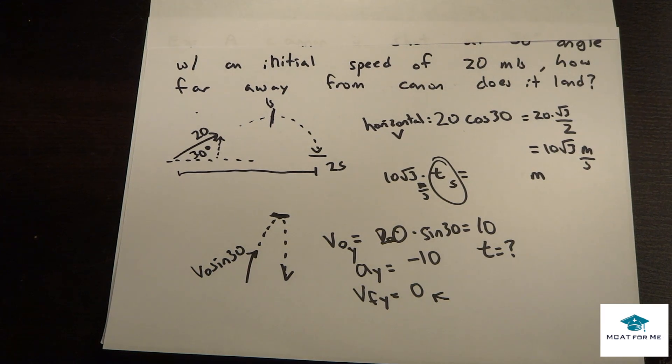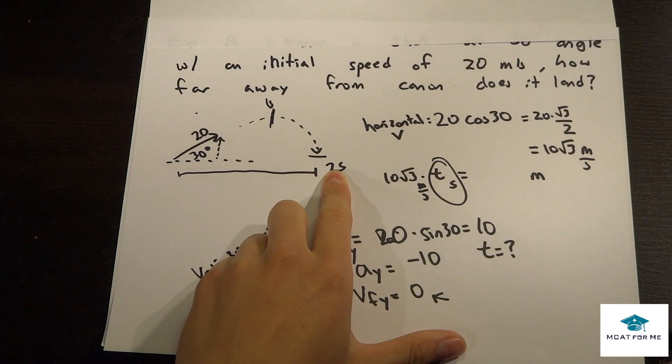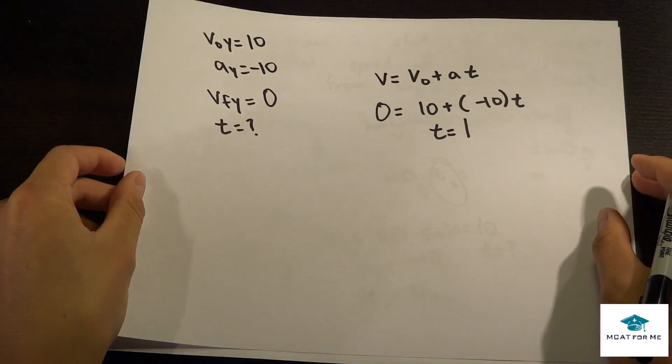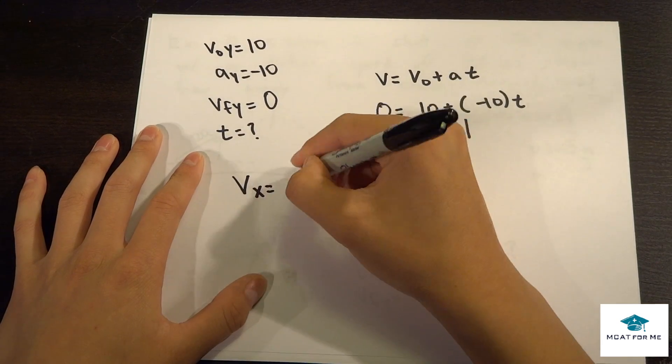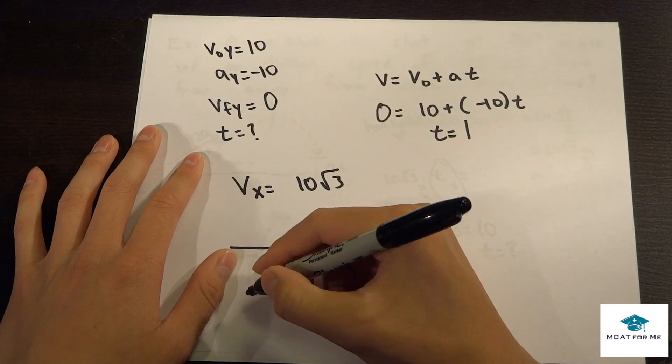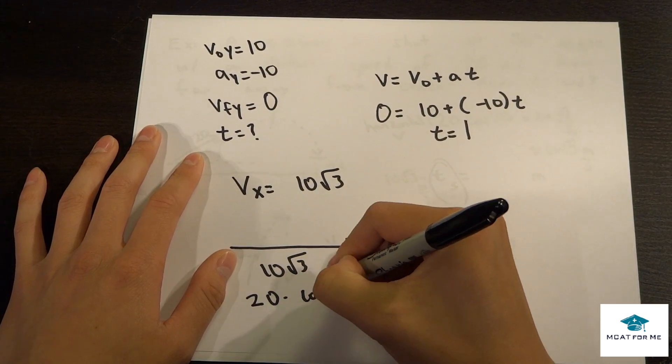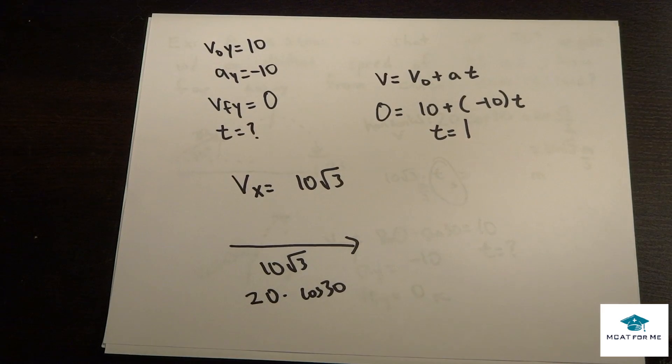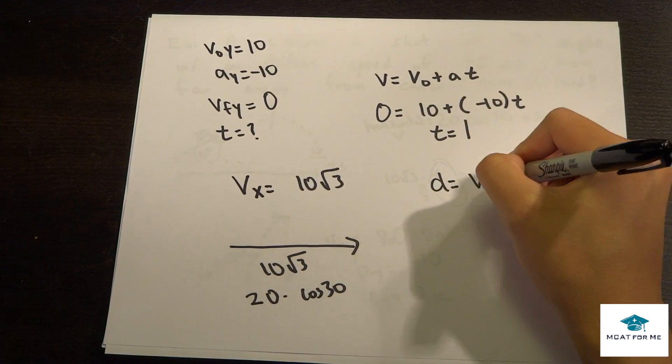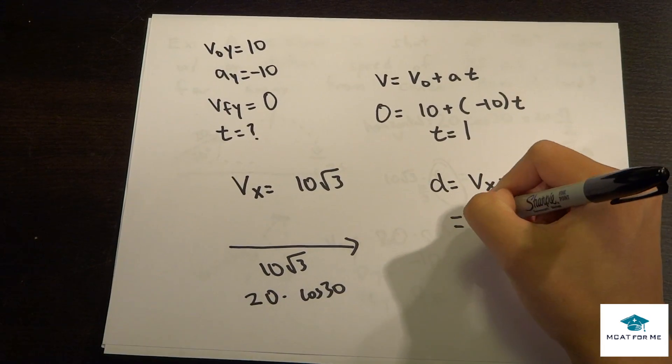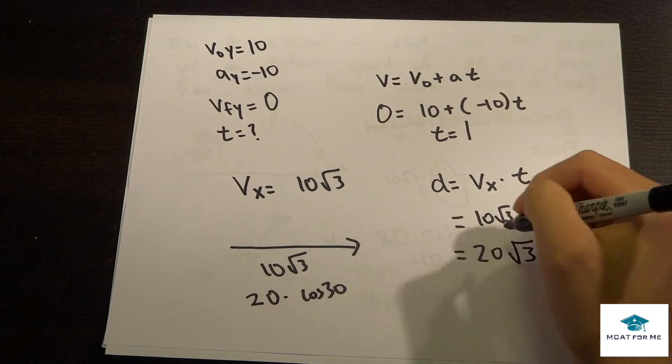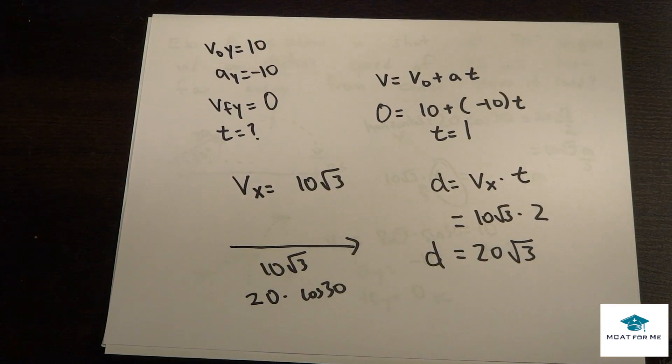What do we do now? We know now that it took 2 seconds to get there, so all we have to do is plug it back into here. We said our Vx was 10 square root 3, our horizontal velocity was always 10 square root 3 because it was 20 times cosine 30, and 20 was our initial speed. All we have to do to find D is Vx times T, and T is the total time, so 10 square root 3 times 2. We know our total distance traveled is 20 square root 3.